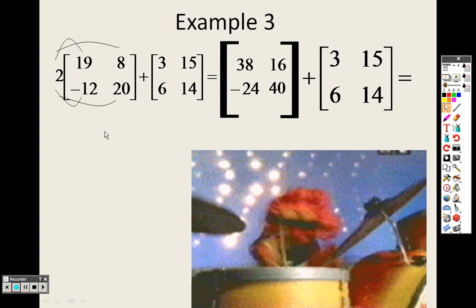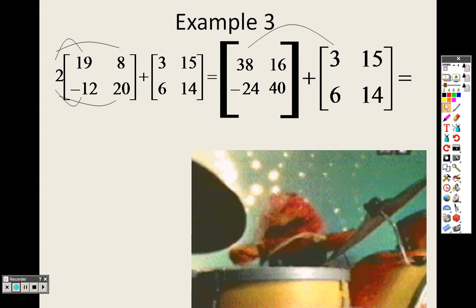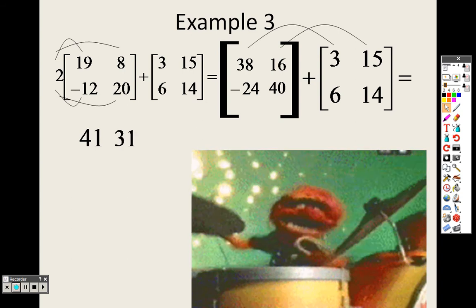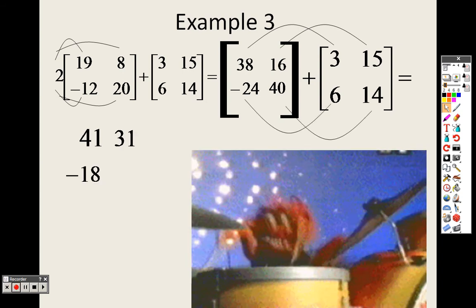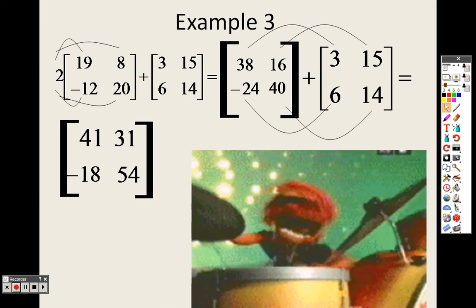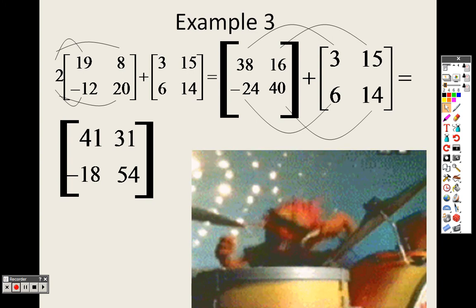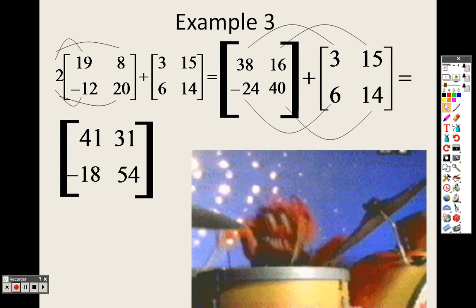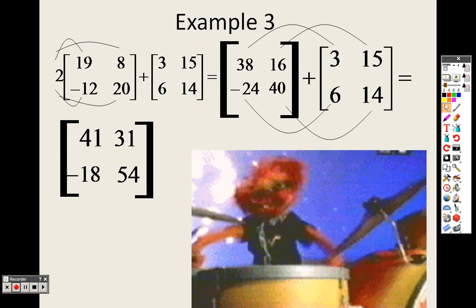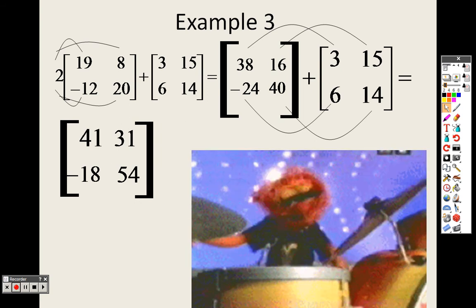And there is your new matrix plus your other one. Now all you do is add them together. So 38 plus 3 is 41, 16 plus 15 is 31, negative 24 plus 6 is negative 18, 40 plus 14 is 54. And there is your answer inside the matrix. So the point is, when you're doing this, you just need to multiply everything through. That's really all you have to do first, and then add everything together.